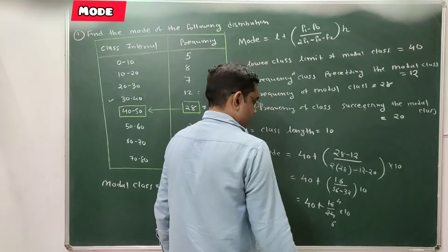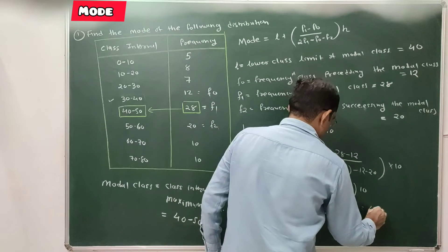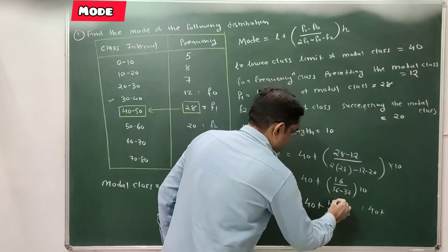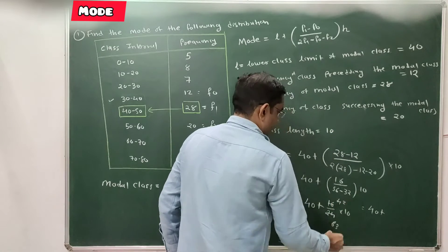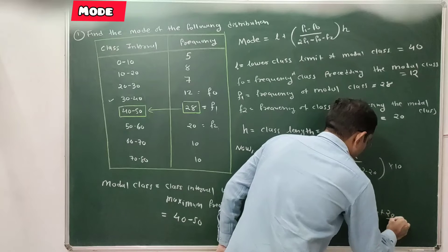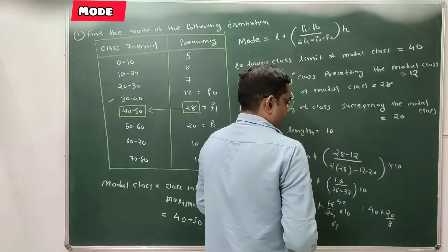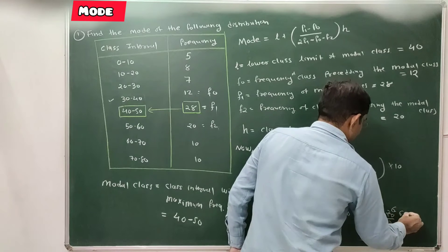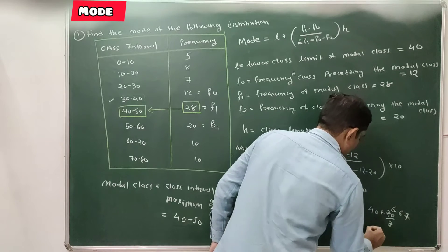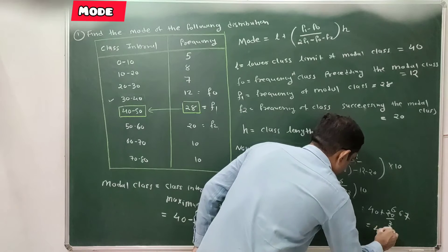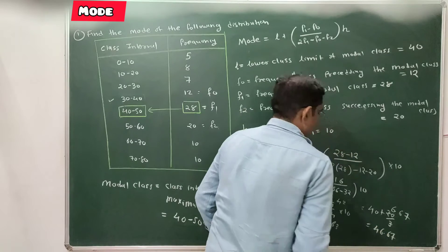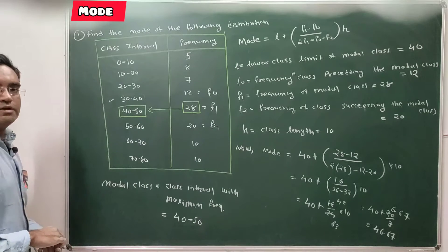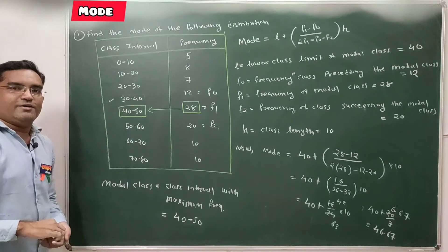Simplifying further: 4 goes into 16 four times and into 24 six times, giving 40 by 6. Dividing again by 2 gives 20 by 3. 20 divided by 3 is 6.67, so the mode is 46.67. Pause the video and note it down.